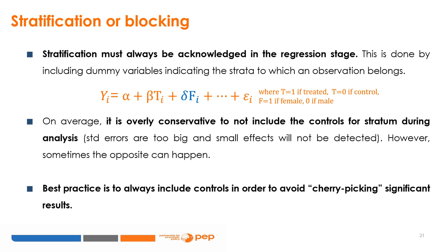On average, it is overly conservative to not include controls for stratum during analysis — standard errors will be too large and small effects will not be detected. However, sometimes the opposite can happen: not including stratum dummies can reduce standard errors, potentially leading to significant effects that are no longer significant when stratification is controlled for. Best practice is to always include controls to avoid cherry-picking significant results.